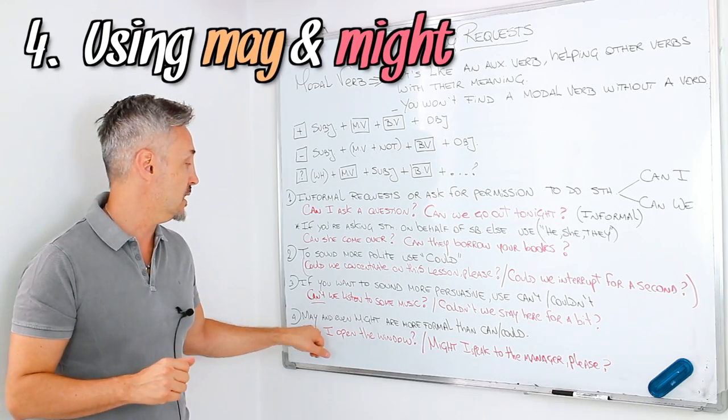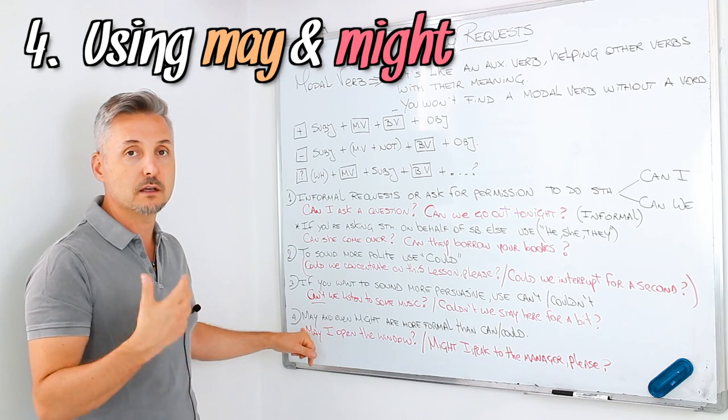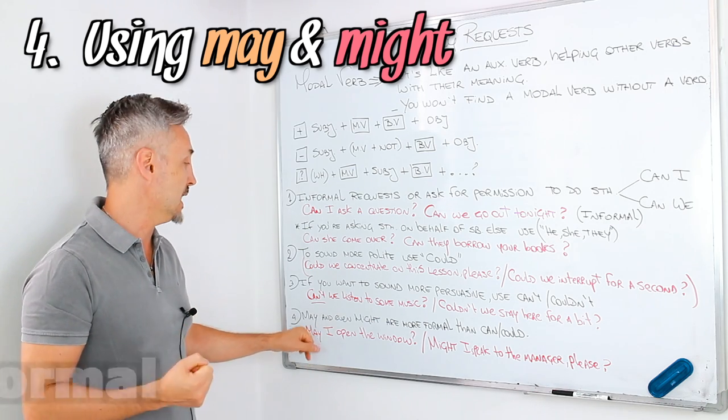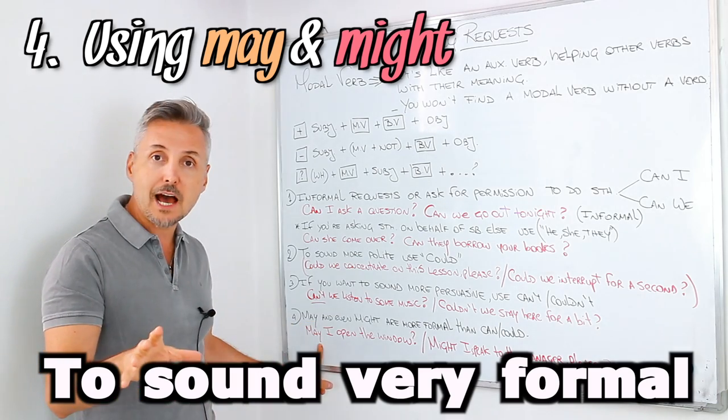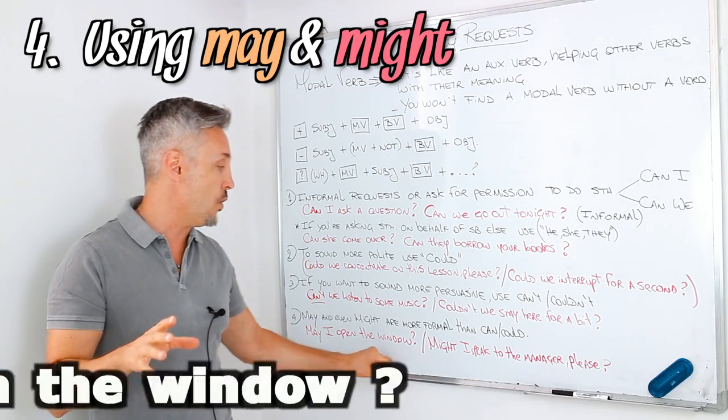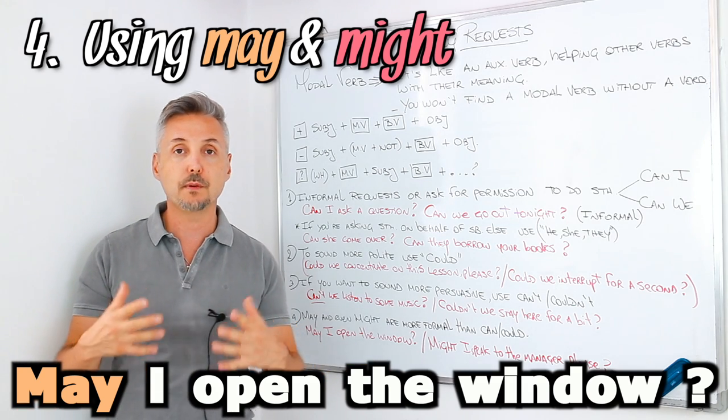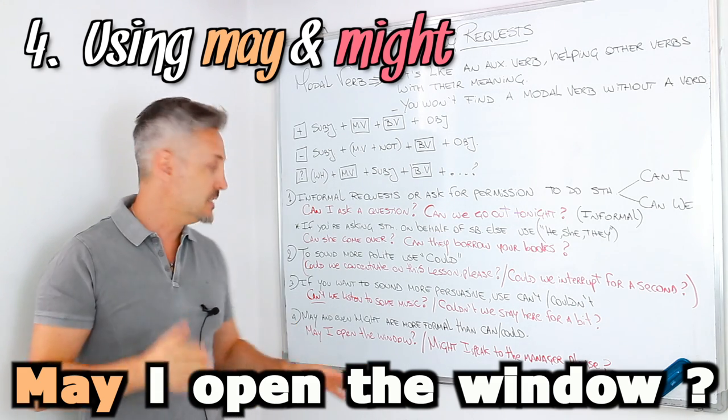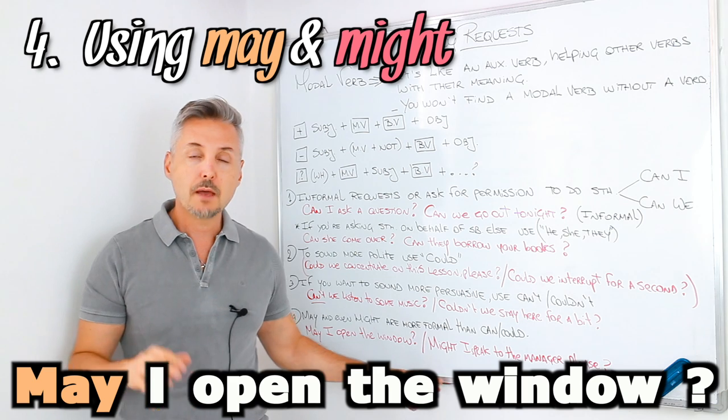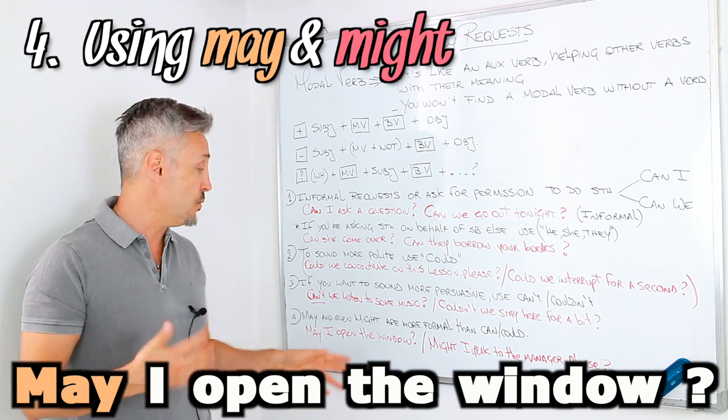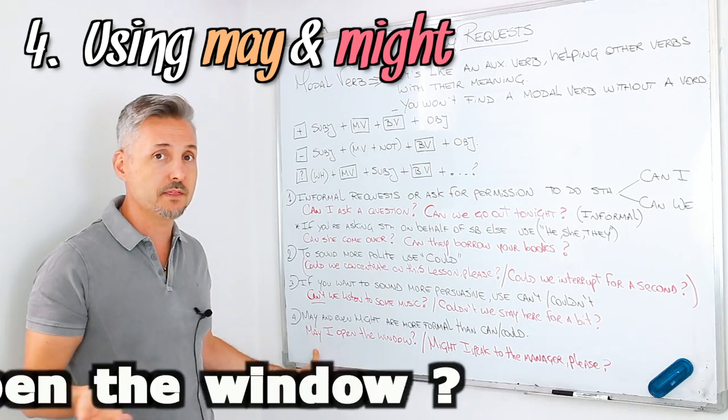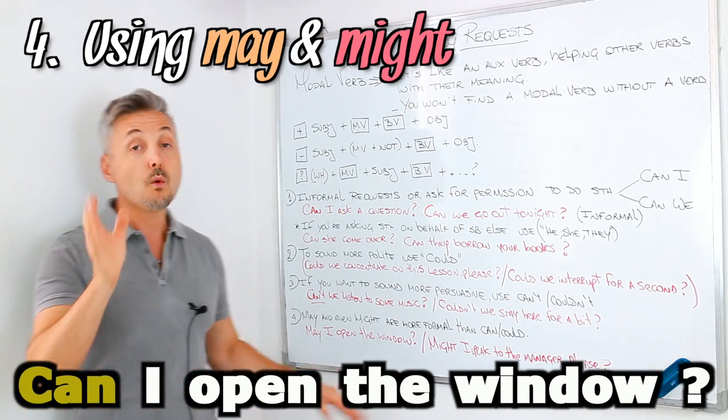So, the fourth point is when to use may and might. May and might are very, very formal. I gave you the example, may I open the window. This is the correct form. But now, since language has changed, we can say, can I open the window?